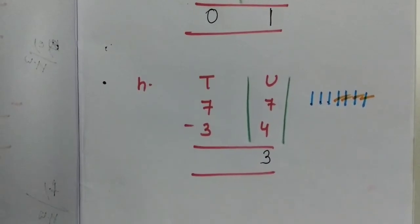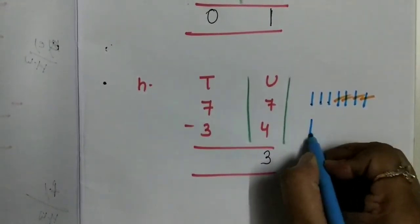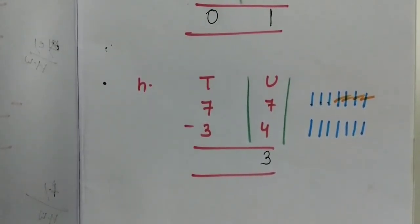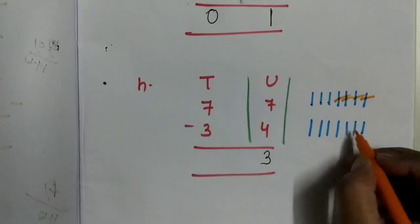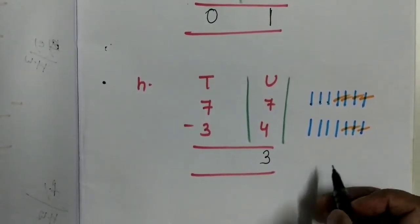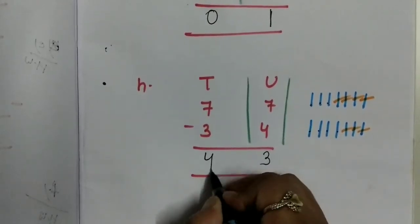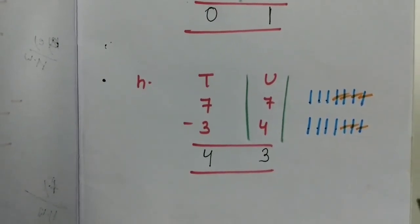Next, 7 minus 3 for the tens column. Draw 7 lines: 1, 2, 3, 4, 5, 6, 7. And remove 3 lines: 1, 2, 3. When we remove 3 lines, how many are remaining? 1, 2, 3, 4. So 7 minus 3 will be 4. This is the subtraction of a 2-digit number.